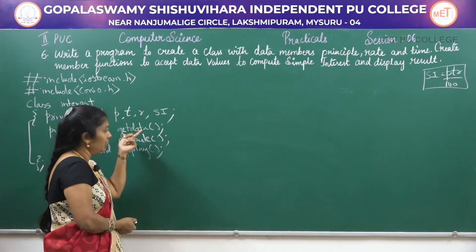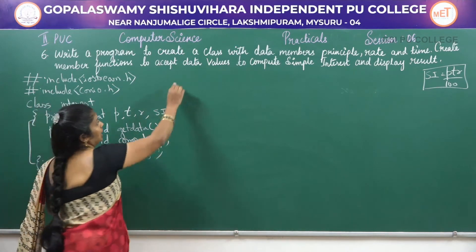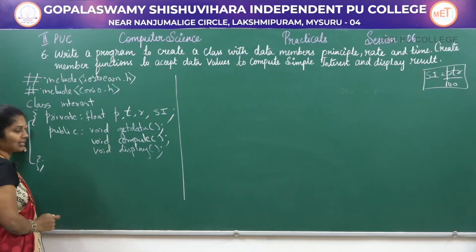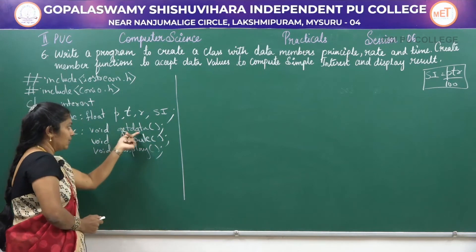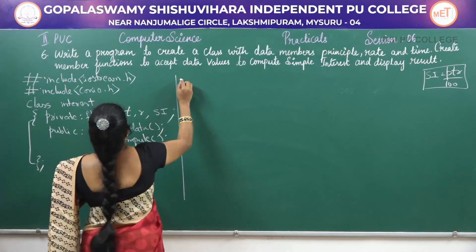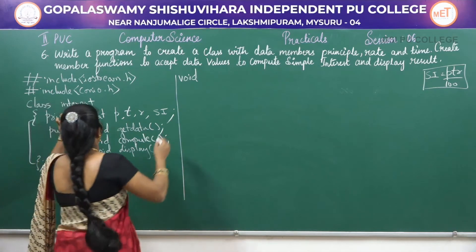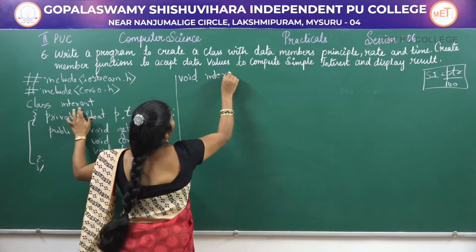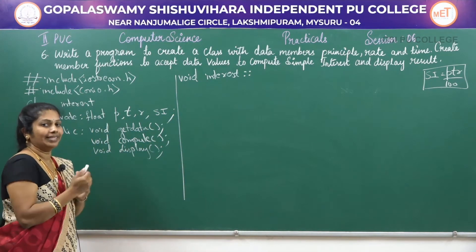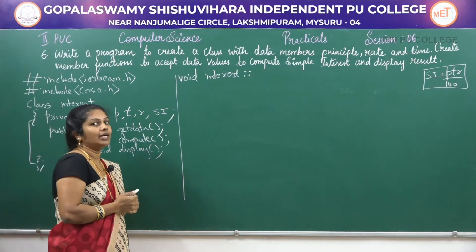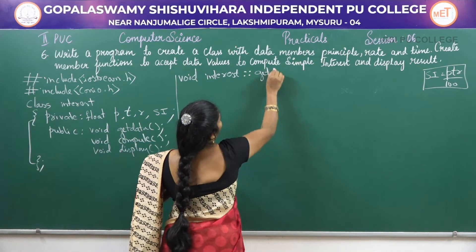Now, one by one we will write the statements of the getdata function, compute function, and display function. For the getdata function, the return type is void. Then write the class name — here we have given 'interest' — followed by the scope resolution operator, then getdata function. To write the statements of a function outside the class, we require the scope resolution operator.